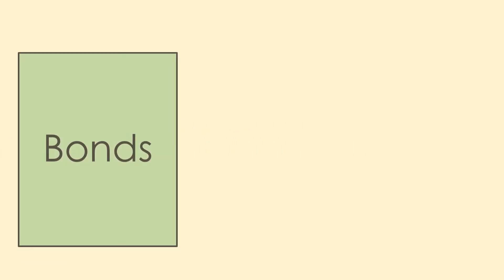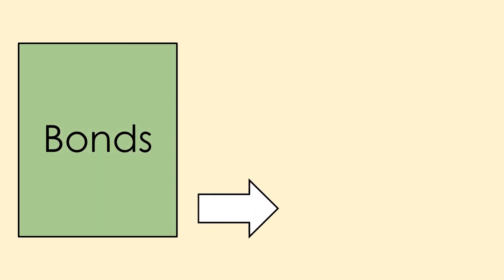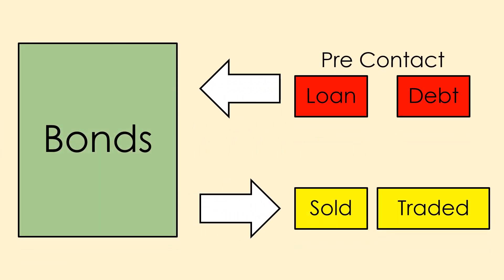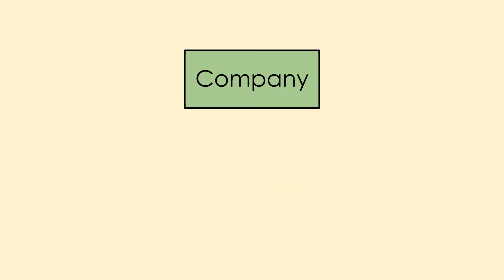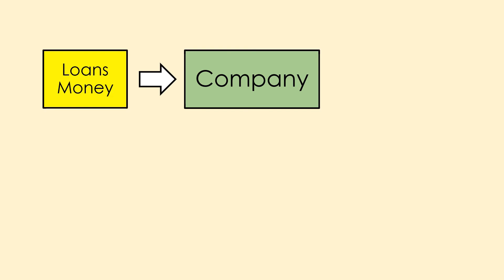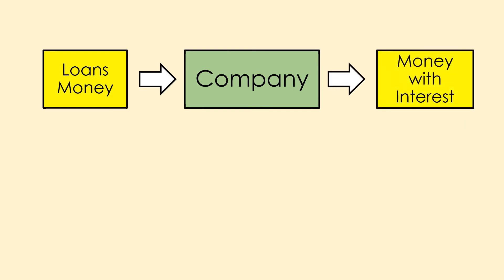In general, companies that trade on OTC markets are smaller than those that trade on primary markets, as OTC markets require less regulation and cost less to use. In a bond market, bonds are sold or bought. A bond is essentially a pre-contract of a loan or debt — a company borrows an amount of money and is required to provide a certain interest over a certain period of time, all specified in a contract called a bond.